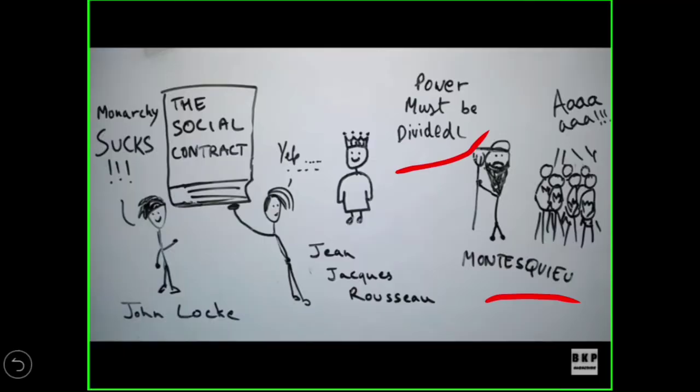This is all for today. In the next class, we will be discussing what was the condition of the third estate and how they reacted through the ideology of these philosophers. Till then, please go through the chapter and try to understand the beginning — about the Bastille, about Versailles, and also about the division in French society. That's all for today. Thank you. Have a good day.